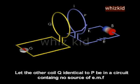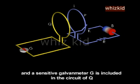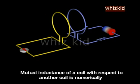Let the other coil Q, identical to P, be in a circuit containing no source of electromotive force, and a sensitive galvanometer G is included in the circuit of Q. Mutual inductance of a coil with respect to another coil